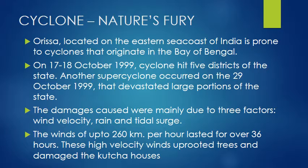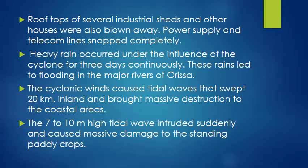The damages caused were mainly due to three factors: wind velocity, rain, and tidal surge. The winds of up to 260 km per hour lasted for over 36 hours. These high velocity winds uprooted trees and damaged the Kaccha houses.